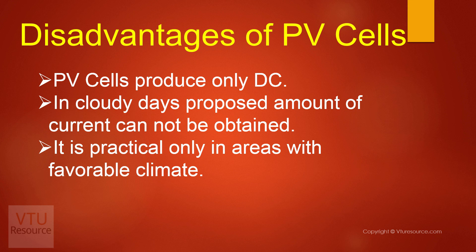In cloudy days, the proposed amount of current cannot be obtained, so it changes accordingly. In summer, the amount of voltage will be more, whereas in cloudy, winter, or rainy seasons, the proposed amount of voltage cannot be obtained.